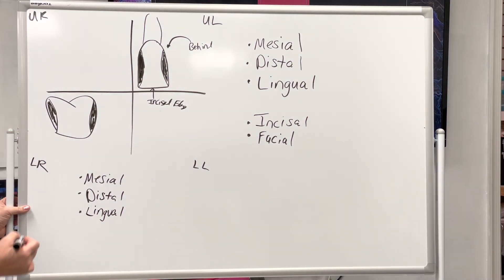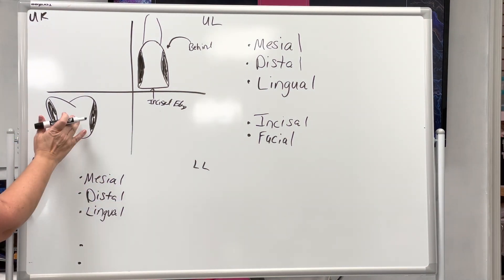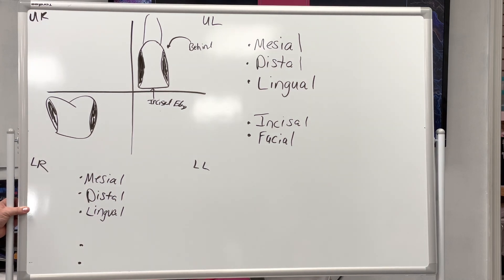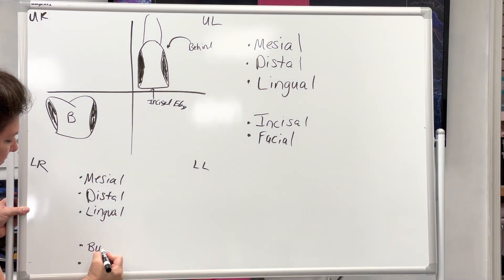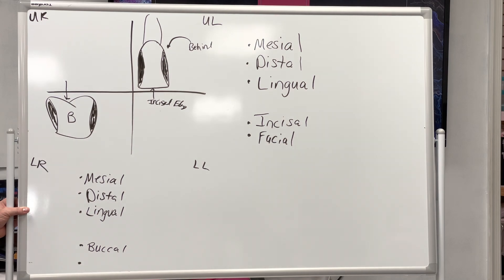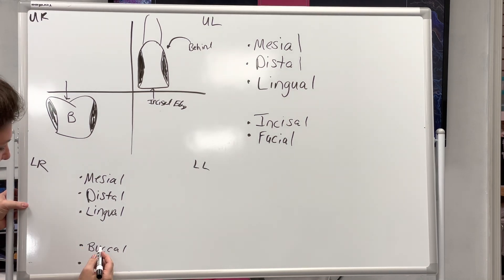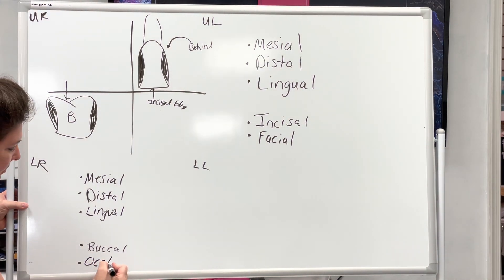Behind the tooth, the lingual. And then there's two that's not the same. You have this part of the tooth that rests up against the cheek. It's called the buccal. And then the top part that you use for chewing - it occludes with the top teeth. So we call it the occlusal surface.